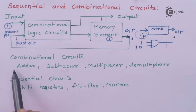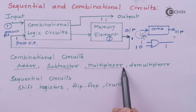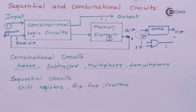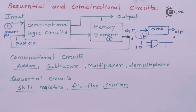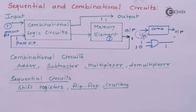Examples of combinational circuits include adder, subtractor, multiplexer, and demultiplexer — there is an immediate change in the output state if there is a change in the input. Sequential circuits like shift registers, flip-flops, and counters store bit memory. They have a memory element as an additional component, which stores bit information that can then be provided as an input. Depending on the present input and that stored bit information, the output is produced accordingly. Such circuits are known as sequential circuits.